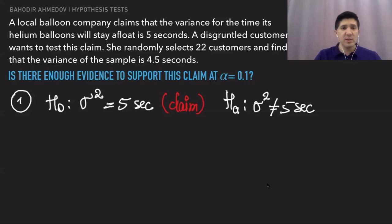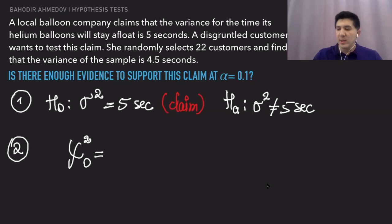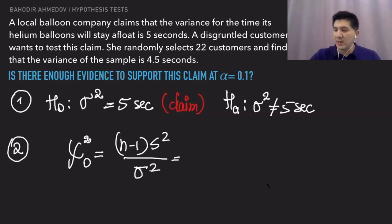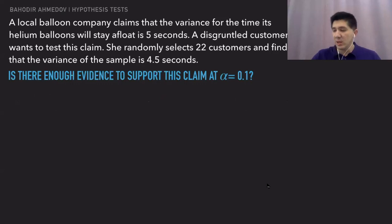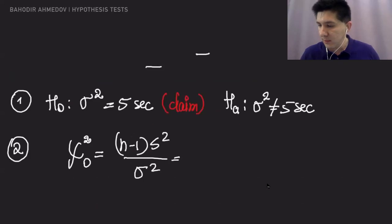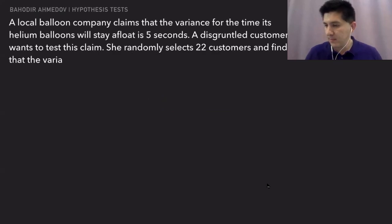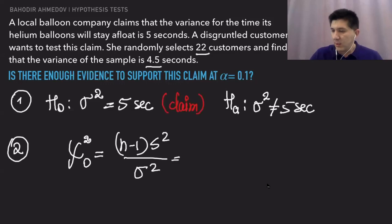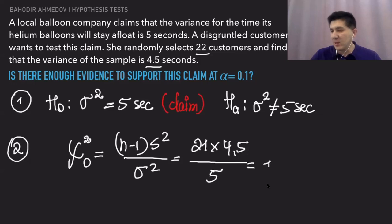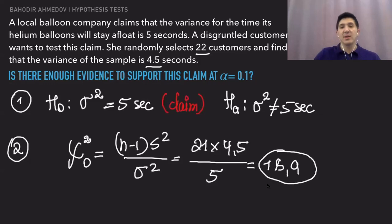In step two we calculate the test statistic. Chi-square equals (n minus 1) times s-squared divided by sigma-squared, which is (22 minus 1) times 4.5 divided by 5, giving 21 times 4.5 divided by 5. Calculating this gives a test statistic of 18.9. Now we need to determine whether this value falls in the rejection region.